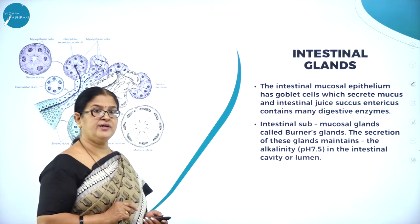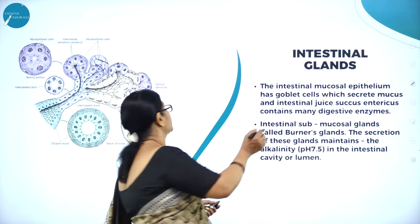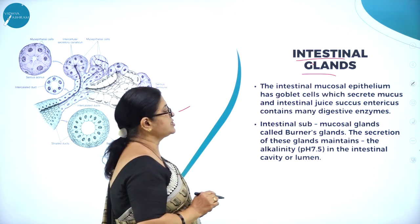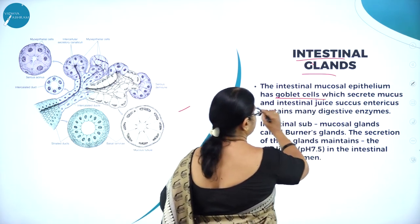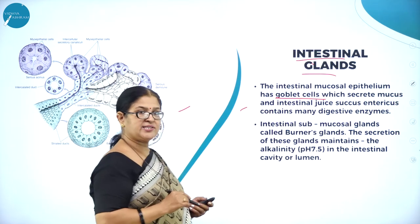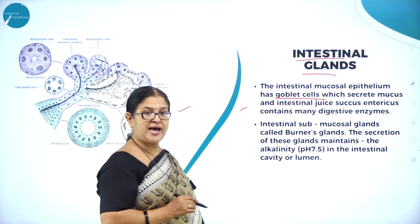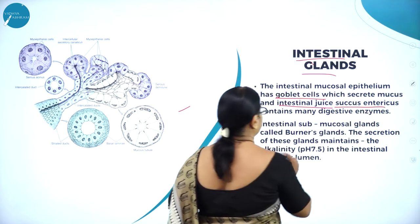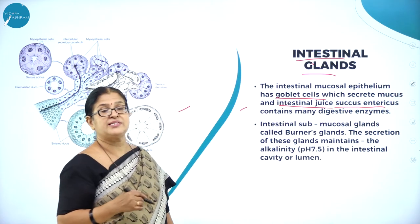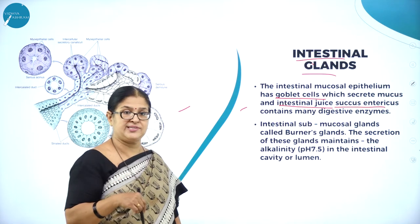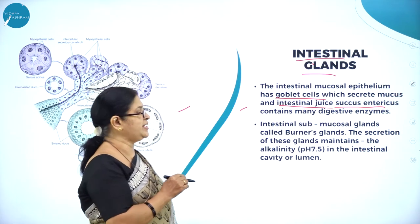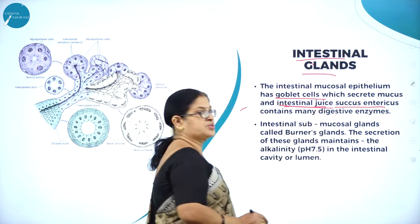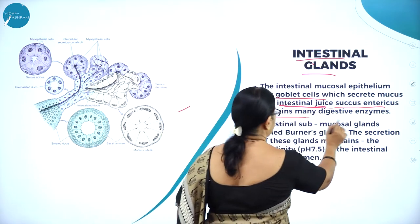Moving on to the next important digestive glands called intestinal glands. The intestinal mucosal epithelium has goblet cells which secrete mucus and intestinal juice called succus entericus. Succus entericus refers to the small intestine. The intestinal mucosal epithelium has goblet cells which secrete mucus and intestinal juice called succus entericus, which contains many digestive enzymes.